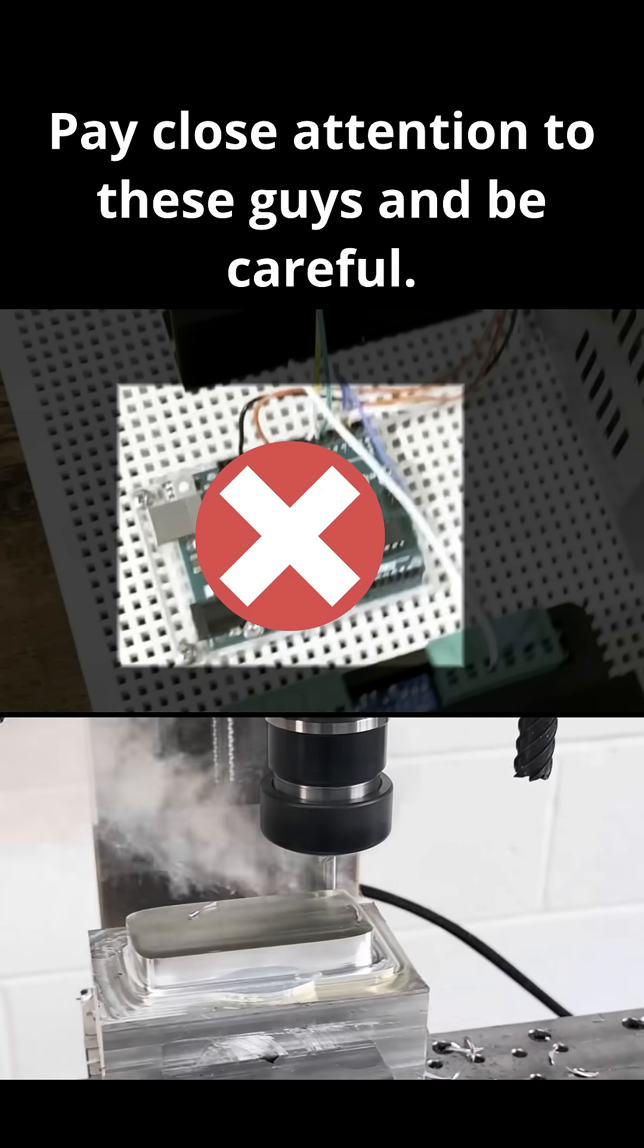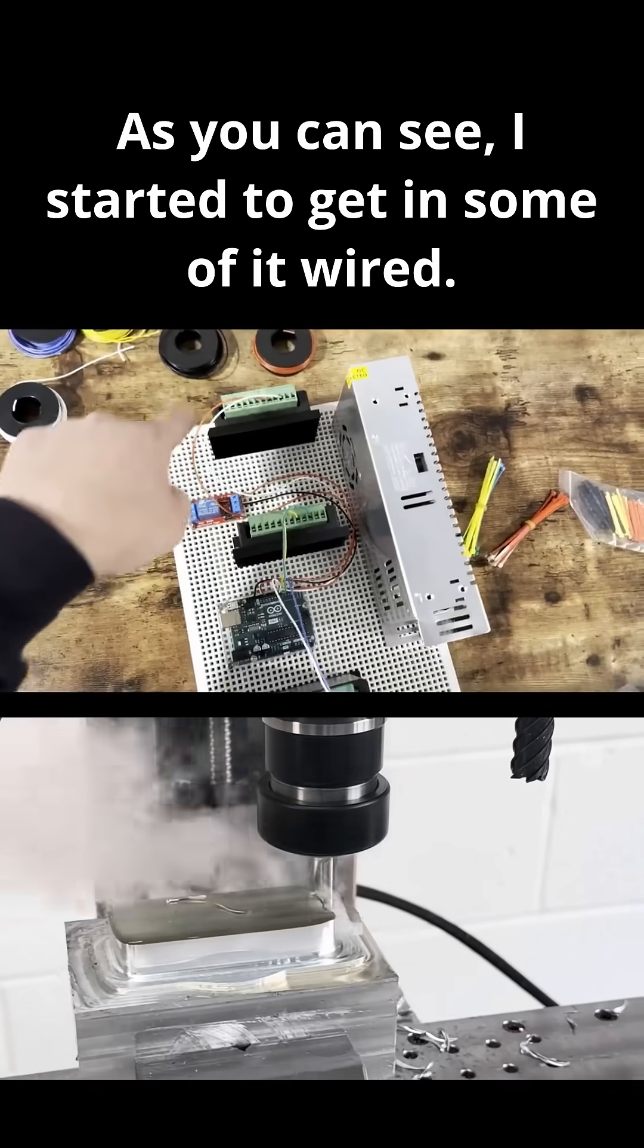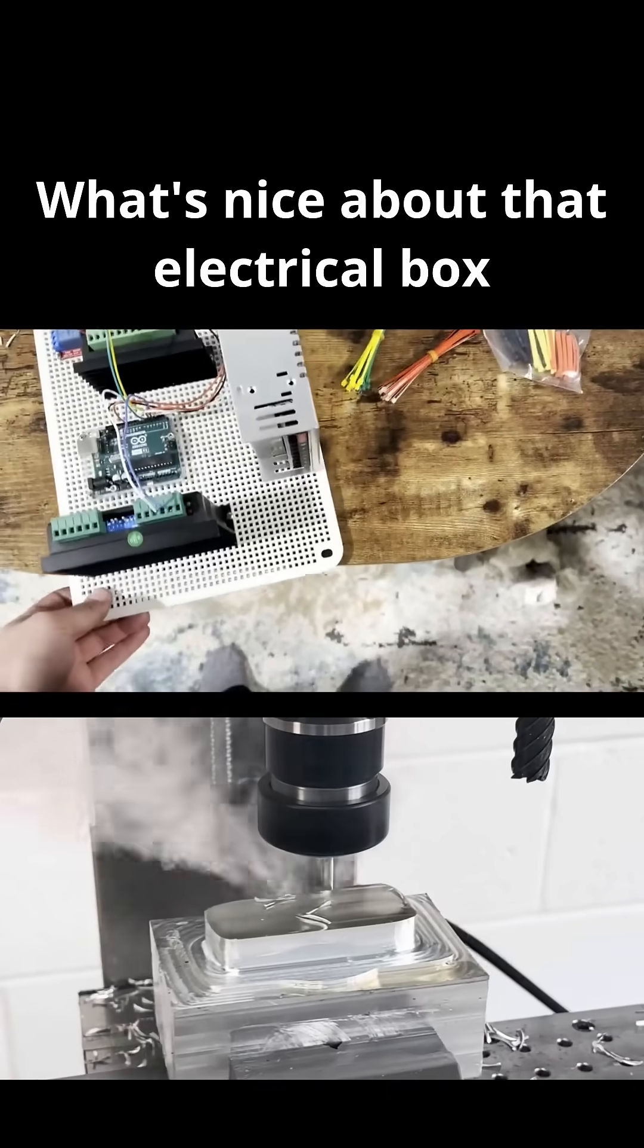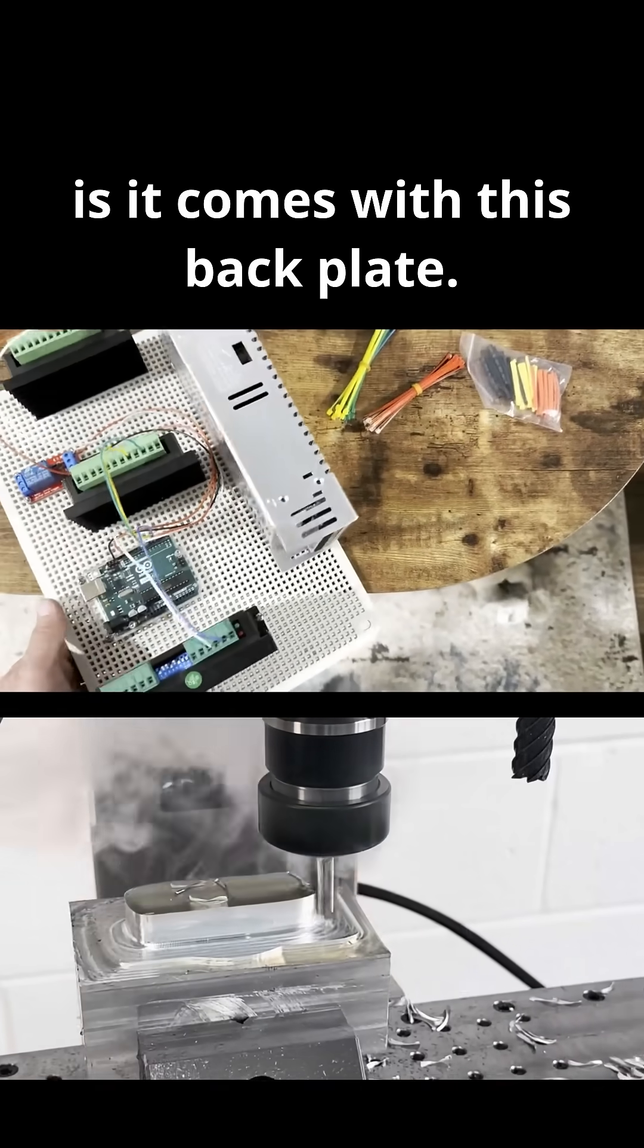Pay close attention to these guys and be careful. Here is the electronics. As you can see, I started getting some of it wired. What's nice about that electrical box is it comes with this back plate.